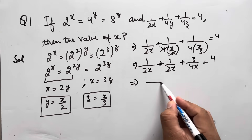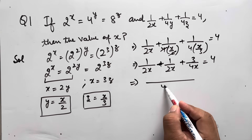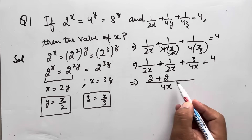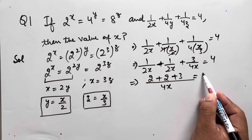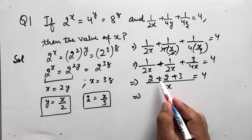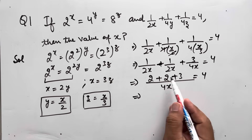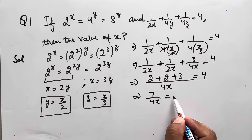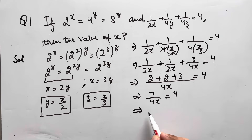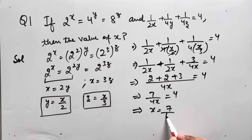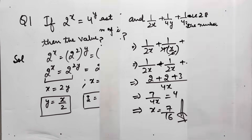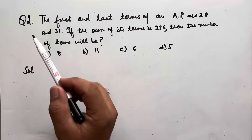Taking LCM as 4x: (2 + 2 + 3)/(4x) = 4, so 7/(4x) = 4, which gives x = 7/16. This is our final answer for question 1.